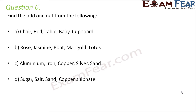Question number 6: find the odd one out. Chair, bed, table, baby, cupboard — all of these are furniture and non-living substances except the baby, so baby is the odd one out. Rose, jasmine, marigold, lotus, boat — these are all flowers except boat, so boat is the odd one out.